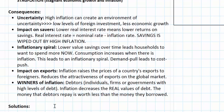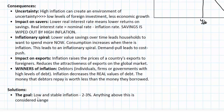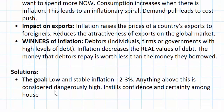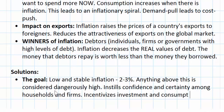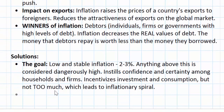This all leads us to solutions. Not all inflation is bad — the goal is low and stable inflation. Generally, central banks and policy makers target an inflation rate of two to three percent, and anything above this is considered dangerously high. This applies more to developed countries; less developed countries with higher economic growth rates should expect to live with higher inflation rates. Two to three percent inflation instills confidence and certainty among households and firms, incentivizes investment and consumption, but not too much, which could lead to an inflationary spiral.